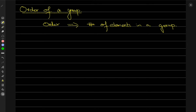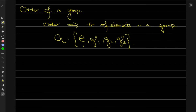For example, suppose I have a group with elements {E, G1, G2, G3} — that's where it ends. How many elements are there? Counting: one, two, three, four — so four elements total. The order of a group is denoted with two vertical lines around G, and for this example the order of the group is four.